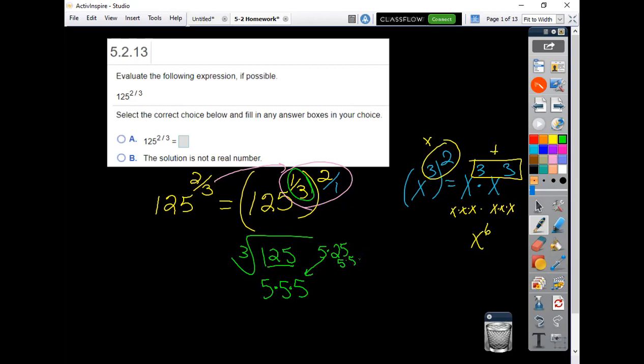So this is five times five, five times five, five times five. So the cube root of 125, this part right in here, that alone is a five, and then it's squared out here. So my final answer for this problem would be 25.